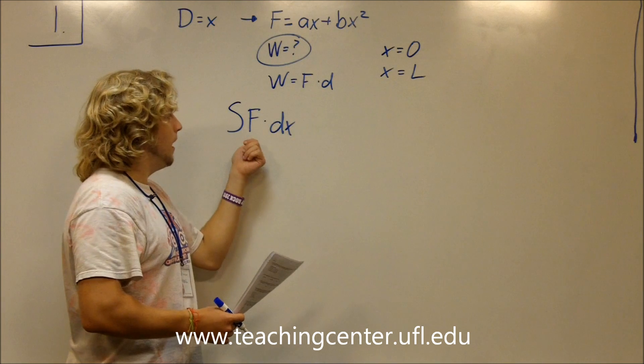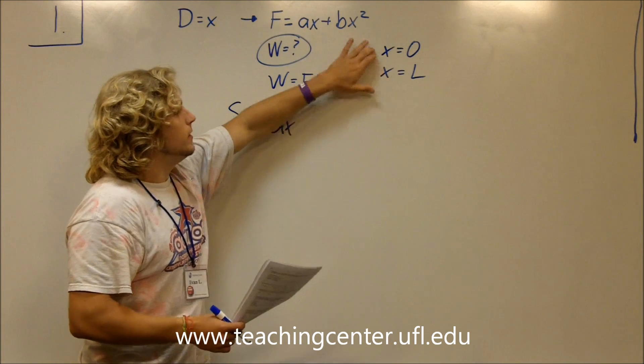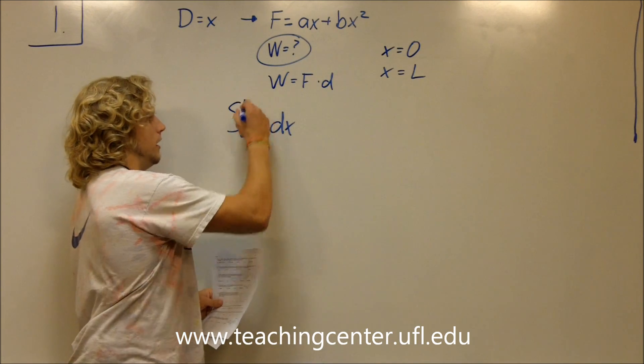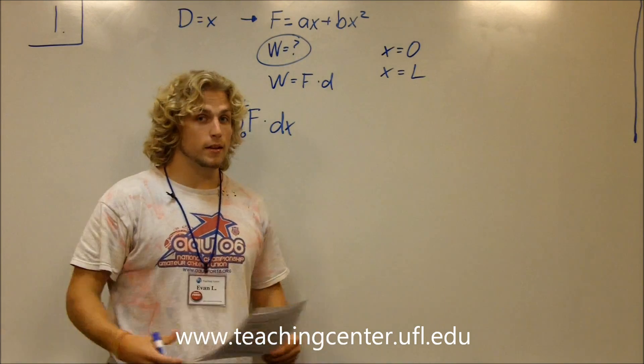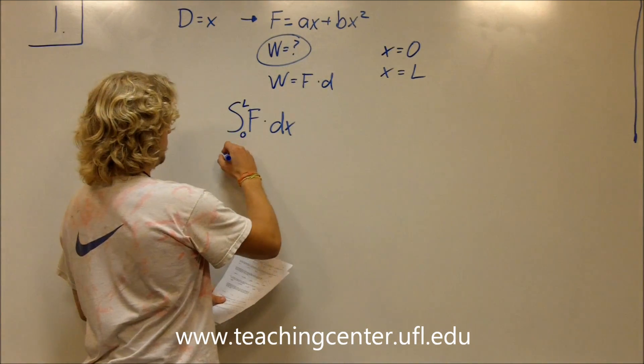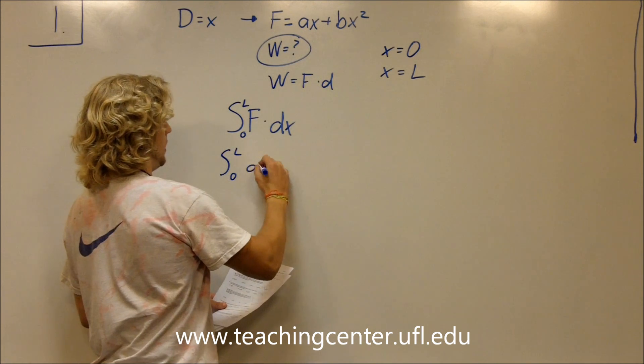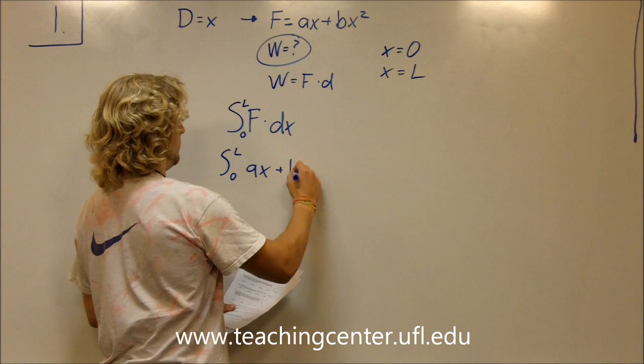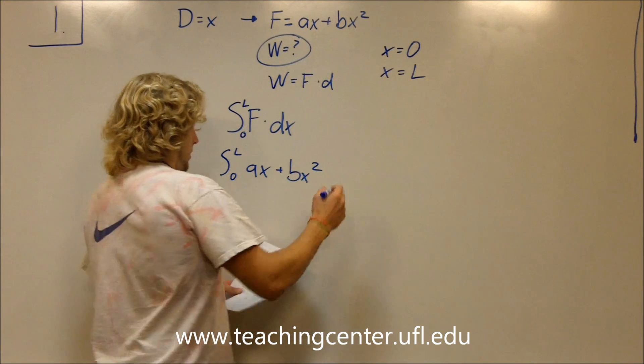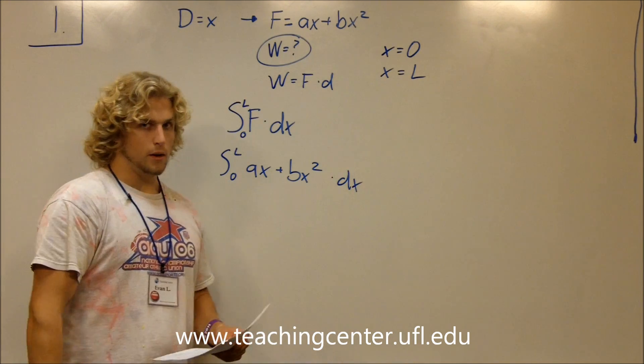The integral in terms of dx, then all of a sudden this looks very similar to this, doesn't it? F times the distance, f times the distance, and then we have the distance here being placed from zero to L. That makes sense now, right? So let's go ahead and do this. We have integral from zero to L of ax plus bx squared dot dx.